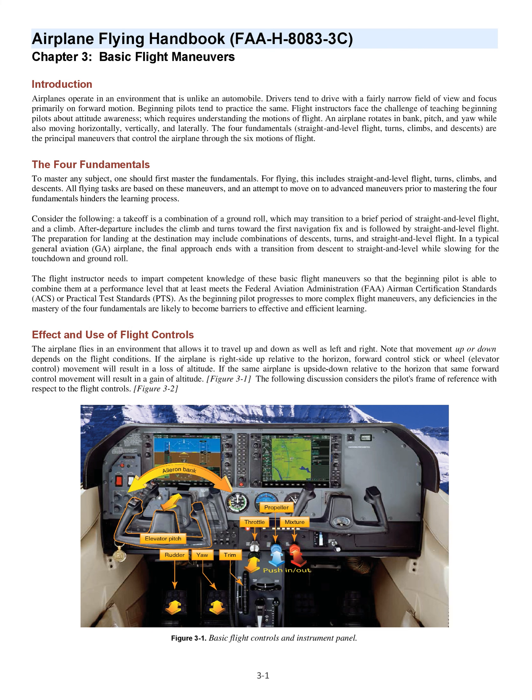Effect and Use of Flight Controls. The airplane flies in an environment that allows it to travel up and down as well as left and right. Note that movement up or down depends on the flight conditions. If the airplane is right side up relative to the horizon, forward control stick or wheel elevator control movement will result in a loss of altitude. If the same airplane is upside down relative to the horizon, that same forward control movement will result in a gain of altitude.